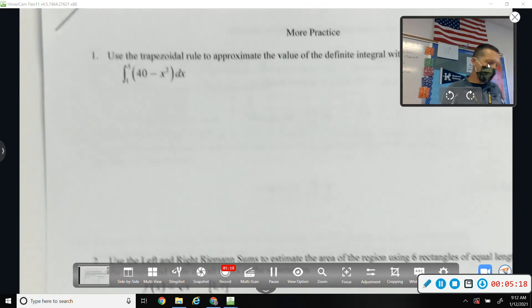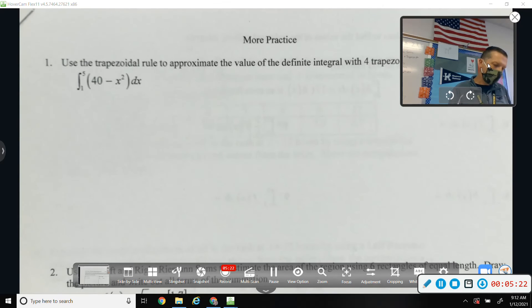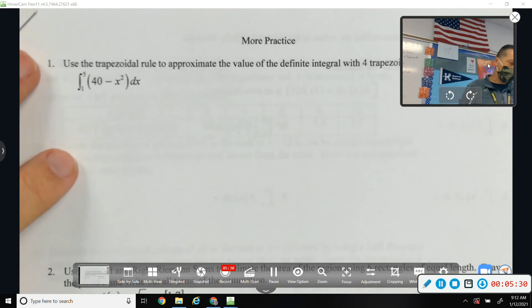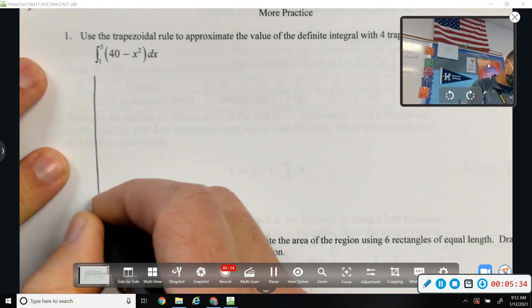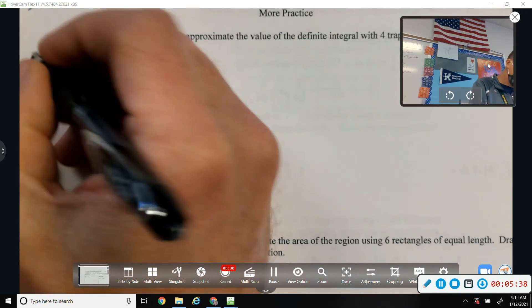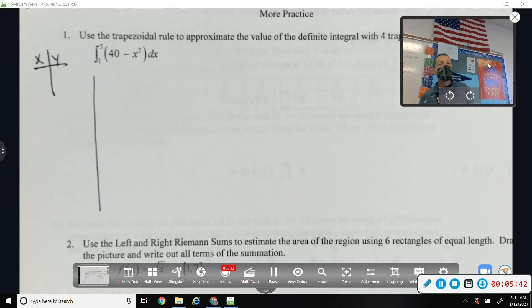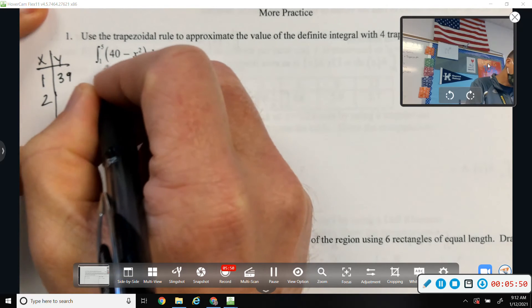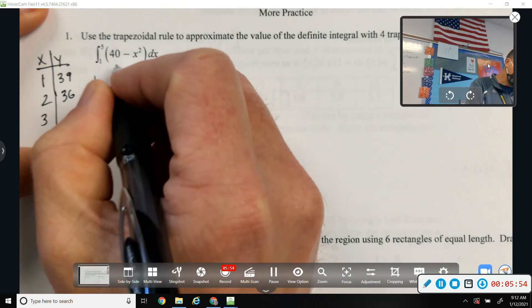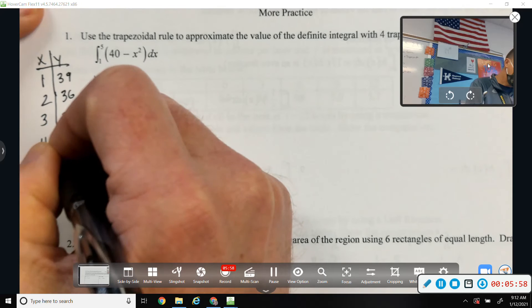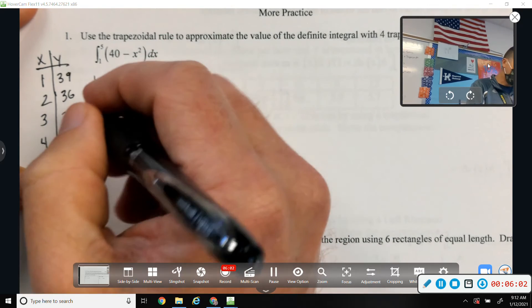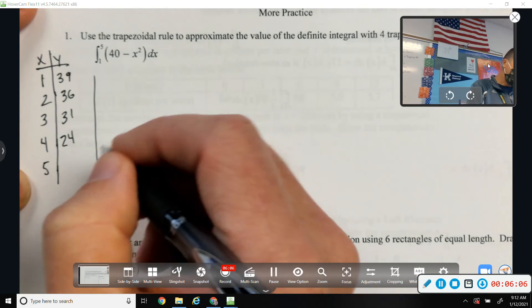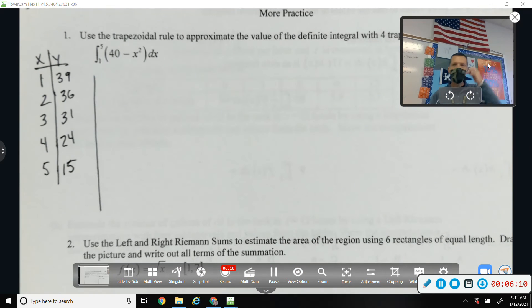Numero uno. Use the trapezoidal rule to approximate the value of the definite integral with 4 trapezoids. Draw the picture. 40 minus x squared, 1 to 5. Maybe a table of values before I start graphing. So, if I plug in 1, I get 39. Plug in 2, I get 36. Plug in 3, I get 40 minus 9 is 31. Plug in 4, 40 minus 16 is 24. I plug in 5, 40 minus 25 is 15. So, that will help me graph it, and chances are I'm going to need those values anyway when I do the trapezoid rule.